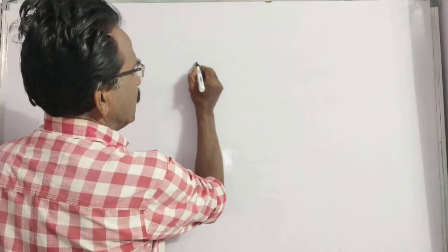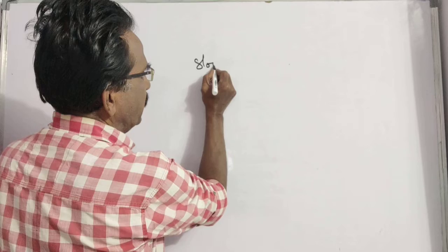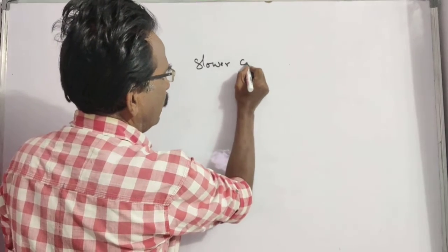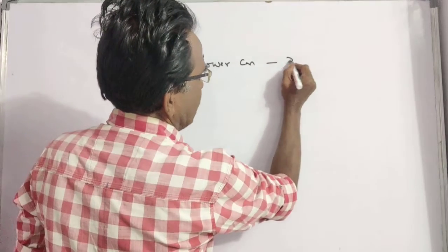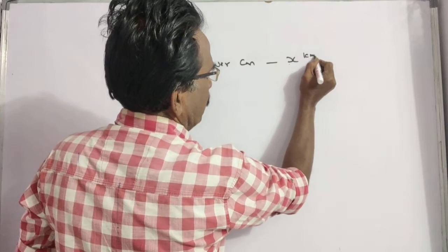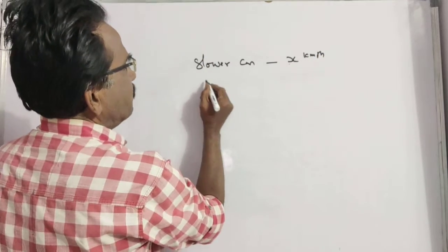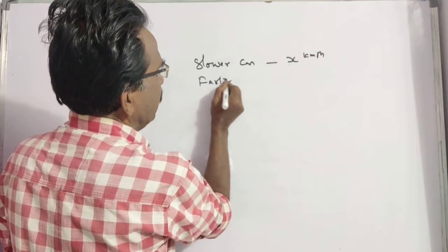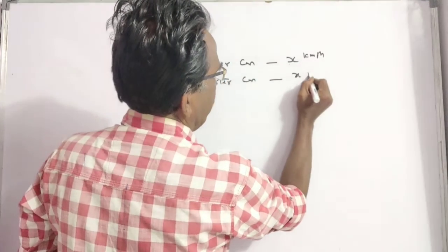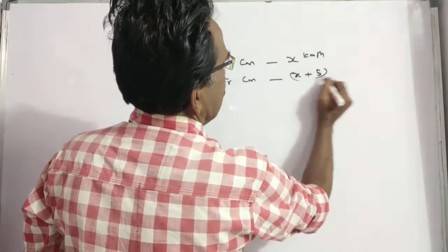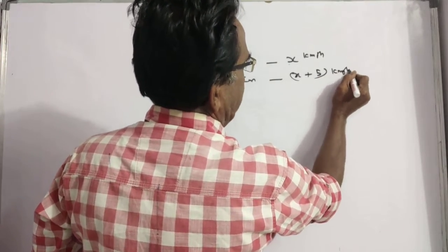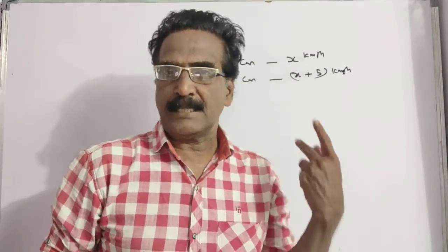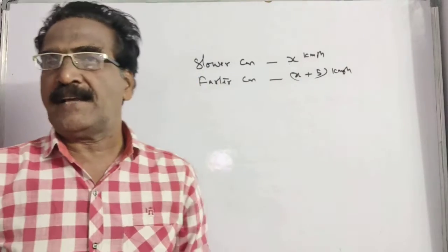Let us say the speed of the slower car is x kmh. Then the speed of the faster car is x plus 5 kmh, because the difference between the speeds is given.